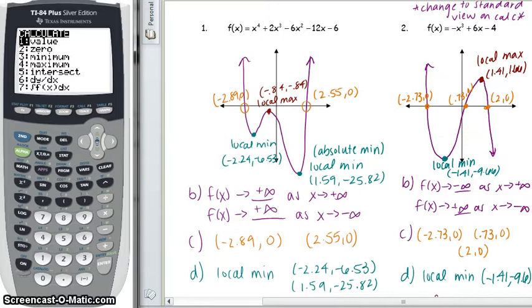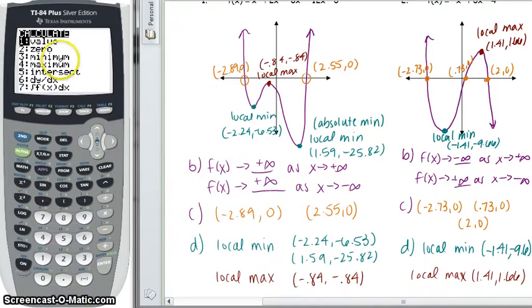And then for our local max, we do the same thing, but except we're going to use our fourth option here for our maximum. This gives us a local max of 1.41, comma, 1.66. Okay, this is the local max because our graph has a higher point as x goes to negative infinity, because our y values just continue to increase that go on to positive infinity.